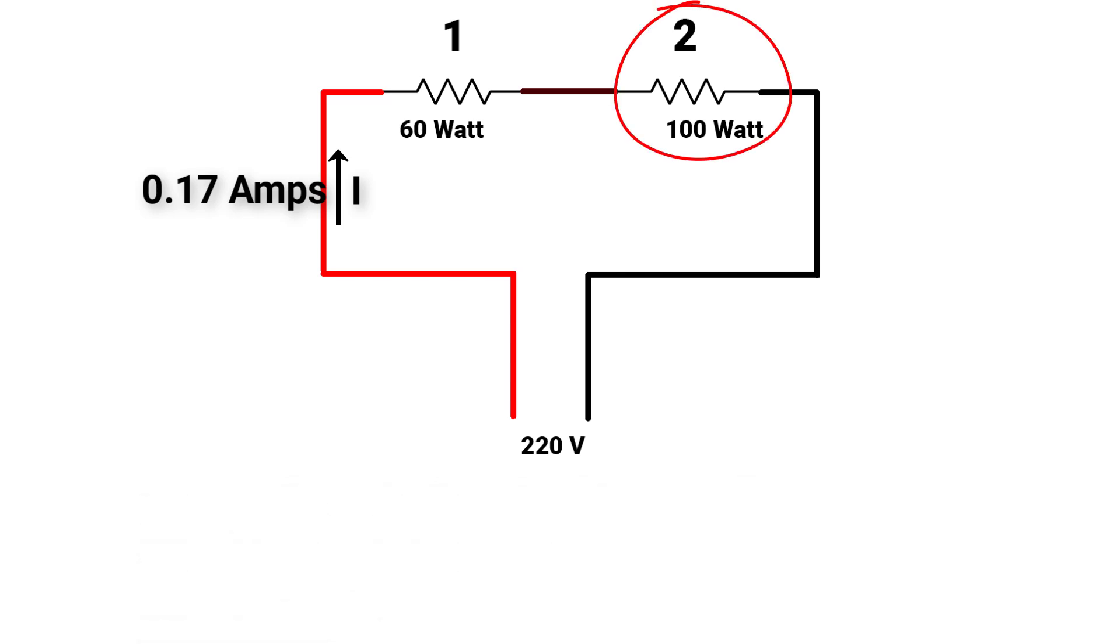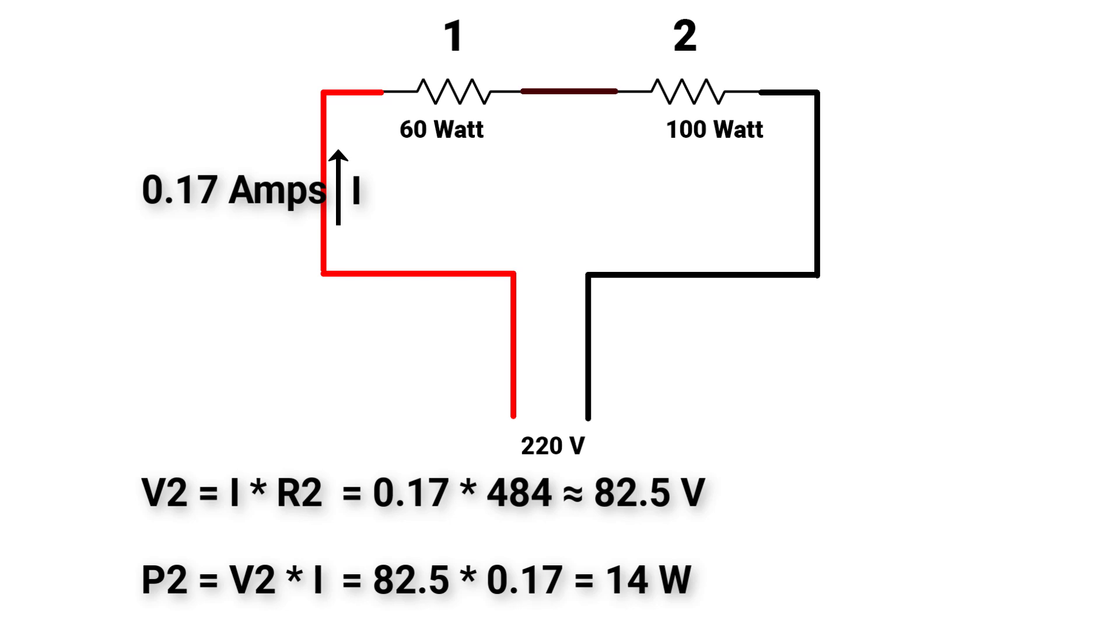For the second lamp, the voltage across it will equal to I times R2, which will equal to approximately 82.5V. Also, the consumed power P2 will equal to V2 times I, which will equal to 14W.